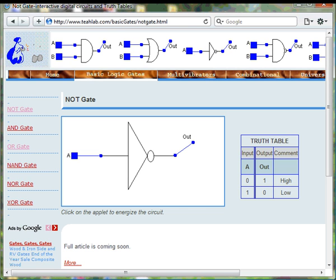Here on TIALab.com, we use the color BLUE to represent 0, FALSE, LOW, and OFF.